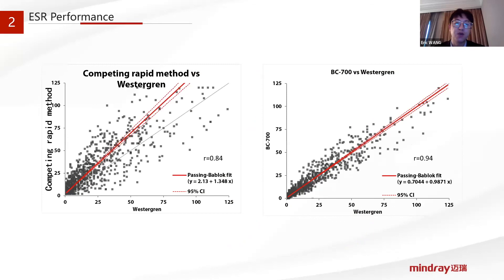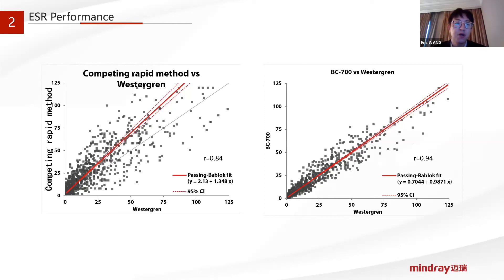We have worked with several hospitals to evaluate the true testing performance of our BC700 series in study departments, including rheumatology and hematology, involving around 300 disease cases. The clinical studies show that the correlation of ESR values from our BC700 series with those from the traditional Westergren method is higher than 0.9, which is much better compared with other rapid ESR analyzers on the market. We also conducted some evaluation in India and will show more data later on.